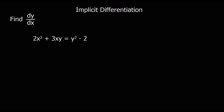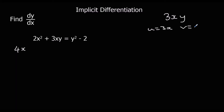Here we have another example. Let's differentiate each term with respect to x. 2x squared differentiates to 4x. Now we've got 3xy, which is two terms multiplied together, so it's a product rule. We say u is 3x, v is y, which makes du/dx equal to 3 and dv/dx equal to dy/dx.